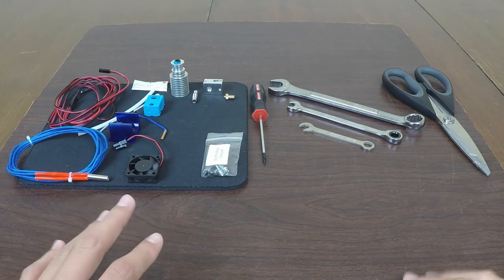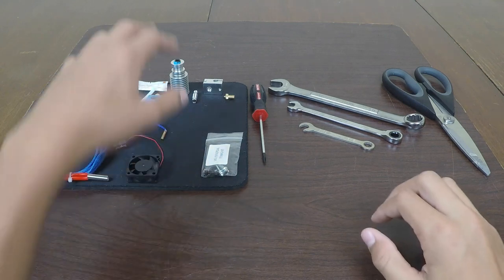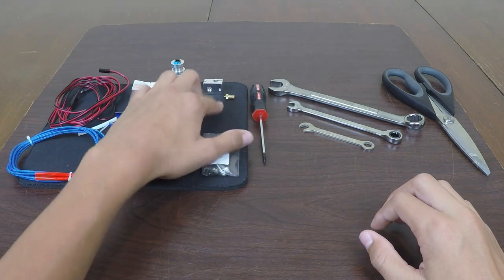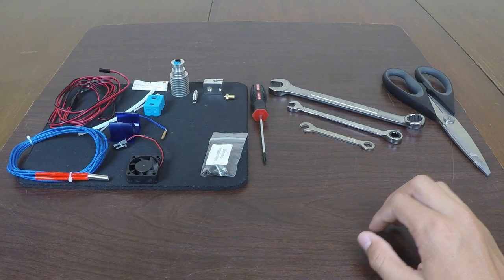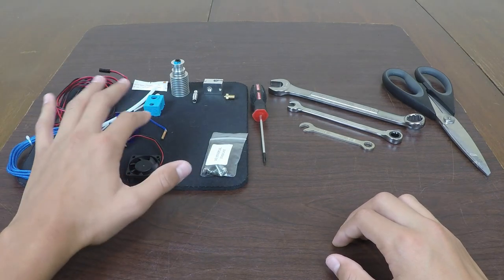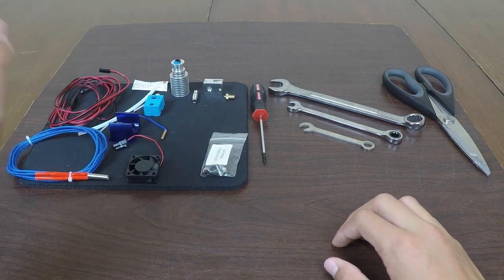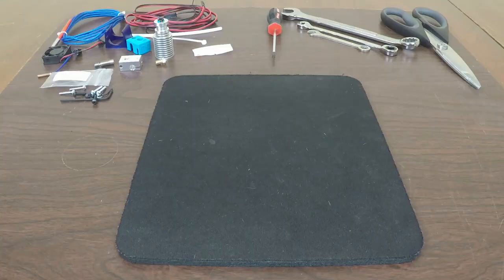First, just to give you a quick overview of what we're going to do here, chronologically we're going to be assembling these four main components: our nozzle, our heat block, our heater break, and our heat sink first. And then from there, we're going to install our heater cartridge and our thermistors, and then we'll get into more of the detailed wiring in the later parts of this video.